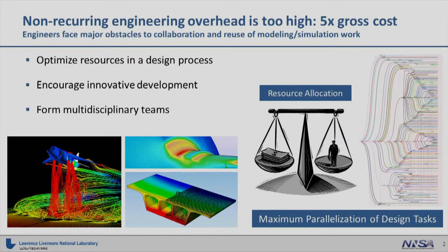Non-recoverable engineering overhead is much too high. You have to take a rough order of magnitude cost approach, and then you have to take that number and multiply it by 5 for an example company with about a 20% R&D budget, which is relatively high.